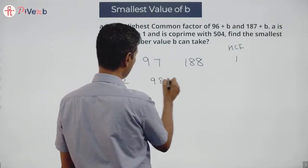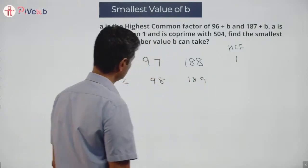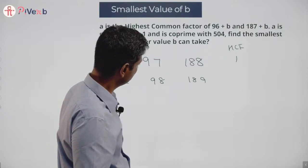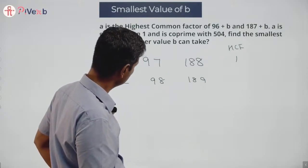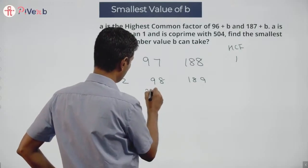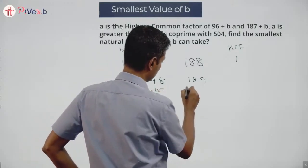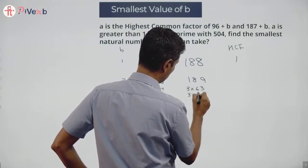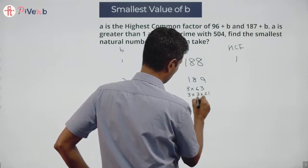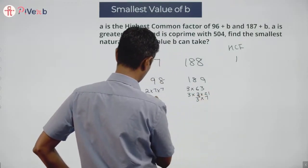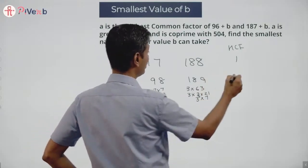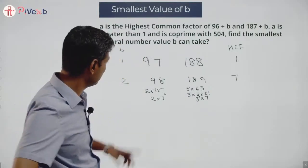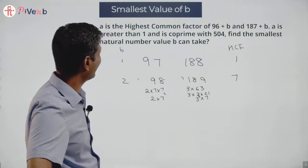Put B as 2. This becomes 98 and 189. 98 is 2 times 7 times 7. 189 is 3 times 63, which is 3 cubed times 7. So 98 is 2 times 7 squared, and the HCF is 7. So when B equals 2, both numbers are multiples of 7, and the HCF is 7.